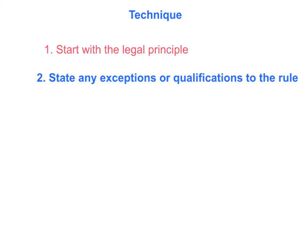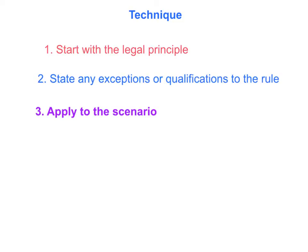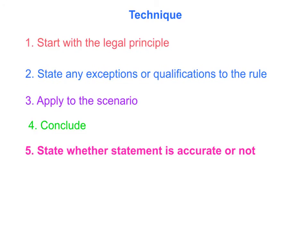You would then look at any exceptions or qualifications to that rule — for example, unless there's evidence to help the court rebut that presumption. You then apply it to the scenario, saying whether it is a social and domestic agreement or not, and whether there is or isn't an exception. You then draw a conclusion — for example, that there is or isn't a legally binding contract. And at the end, remember to say whether the statement is accurate or not.